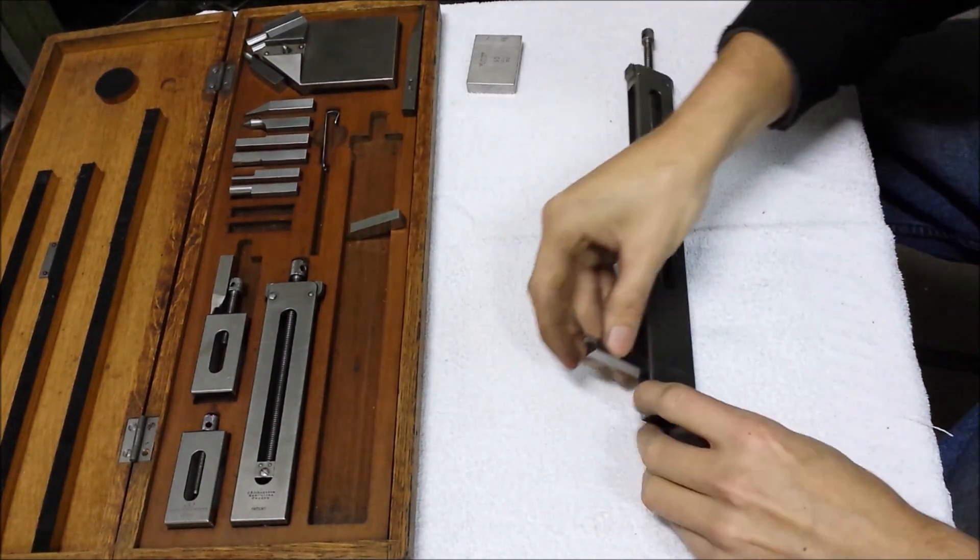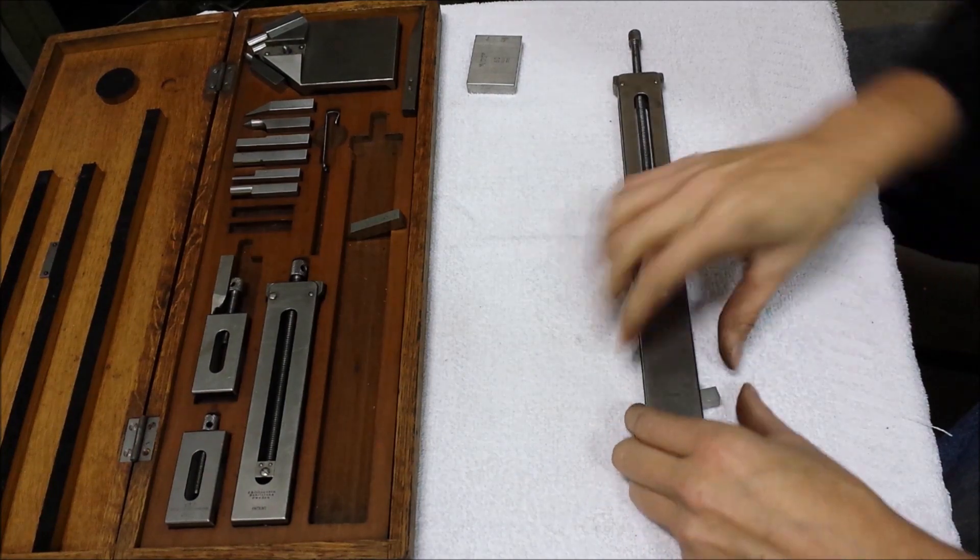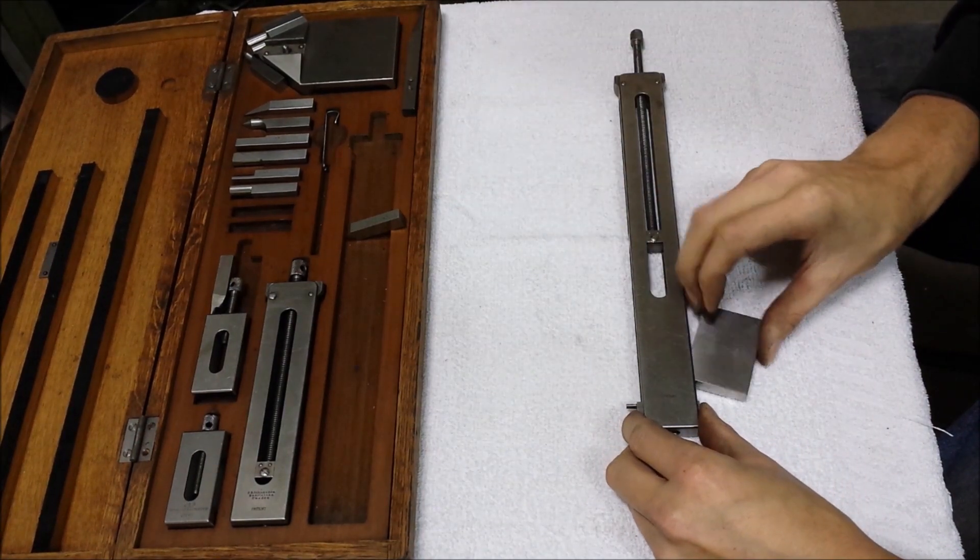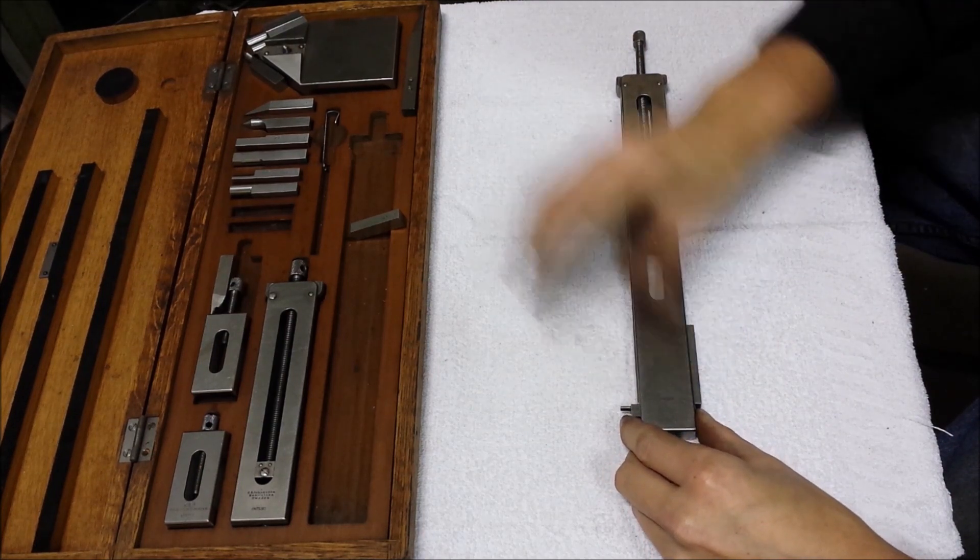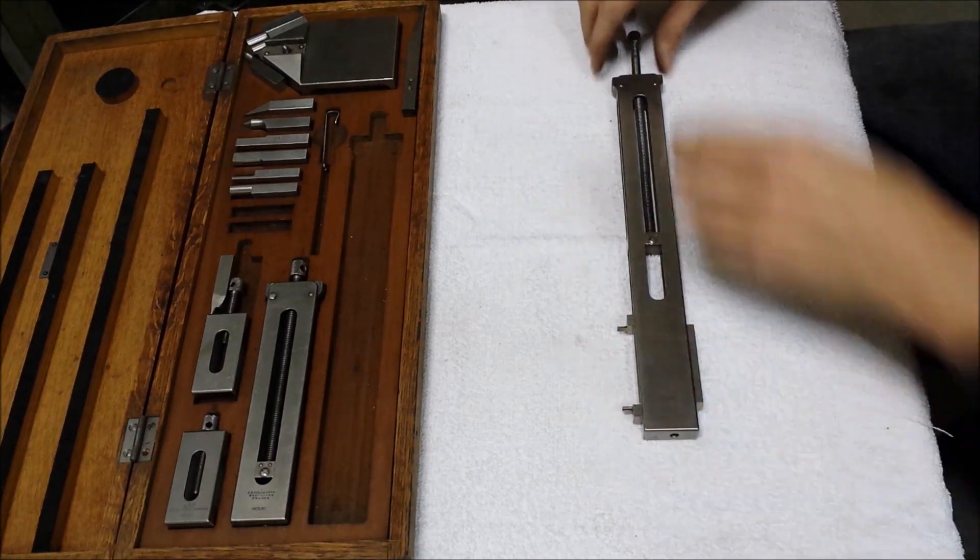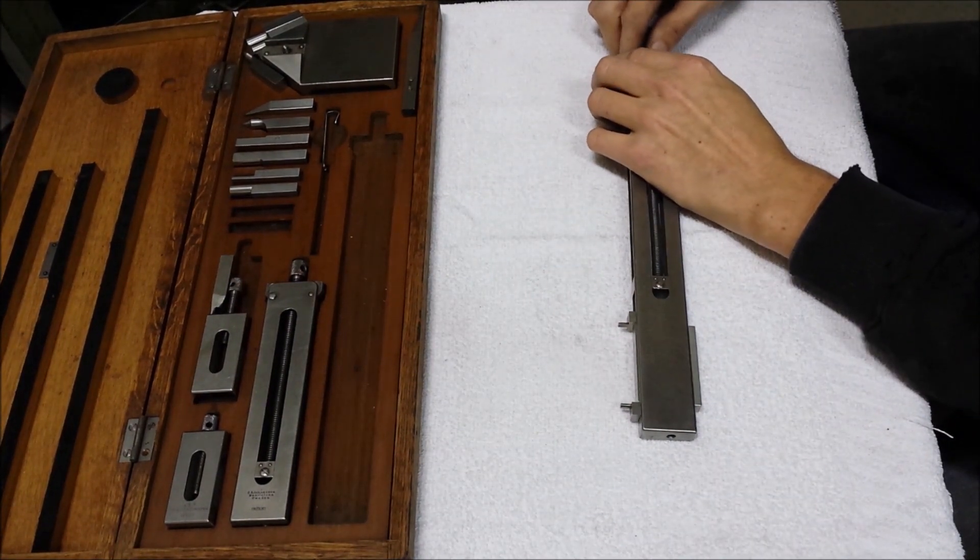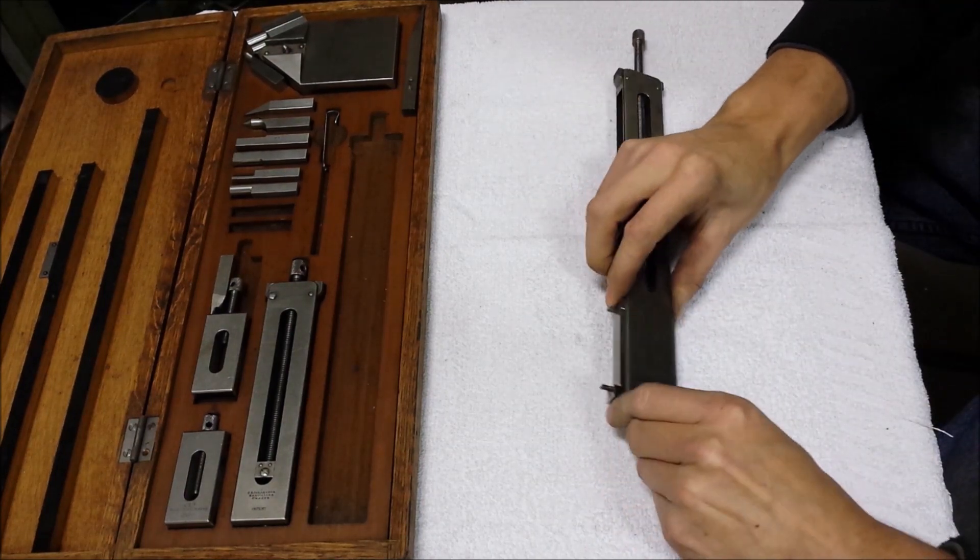You could stack these in and a known gauge block stack for the measurement you want to check. You could put this one in, this is the... yeah, this one doesn't go down that far, but you get the idea anyway.